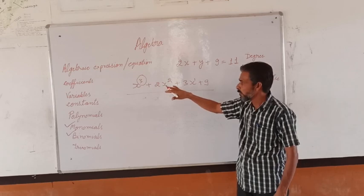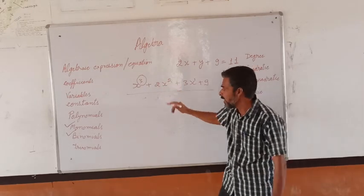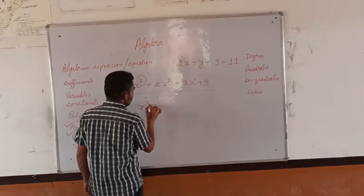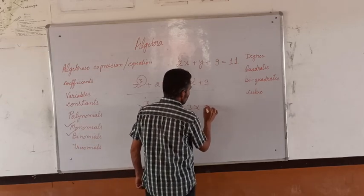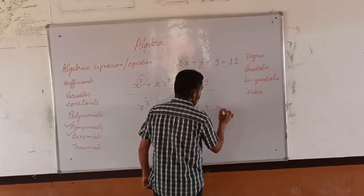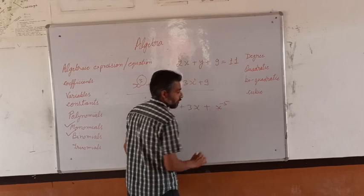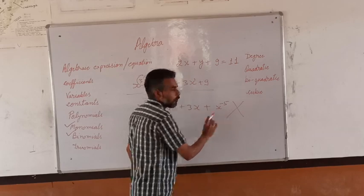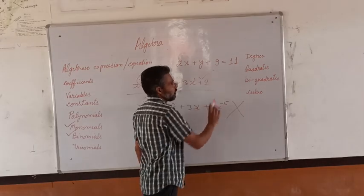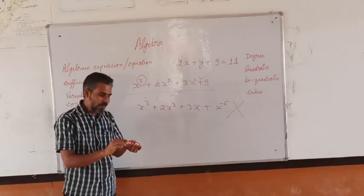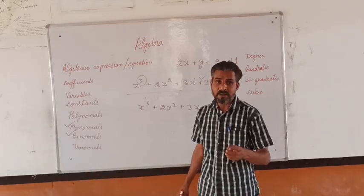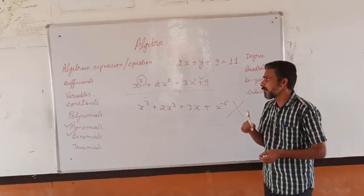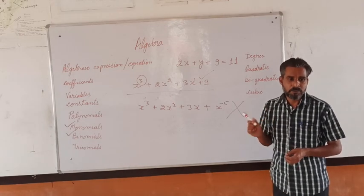The powers should be only polynomial. If we are having x cubed plus 2x squared plus 3x plus x to the power minus 5, this will not be a polynomial. So if we are having negative exponential integers in any of the expression, there will not be a polynomial.